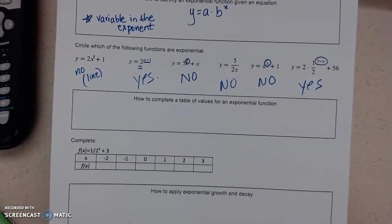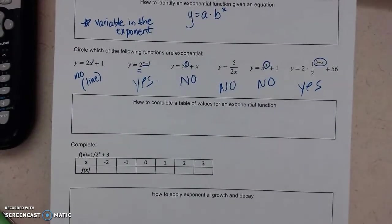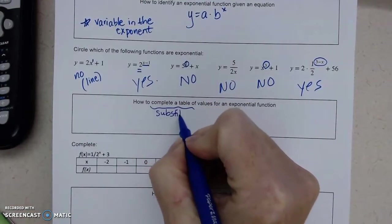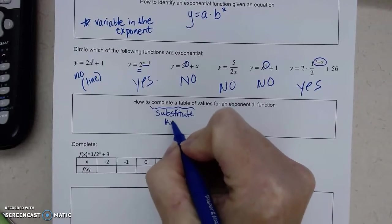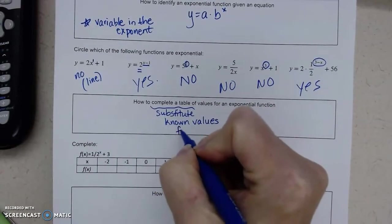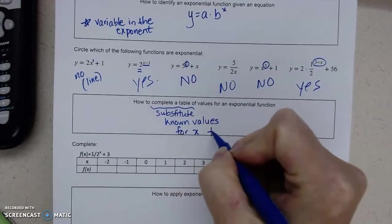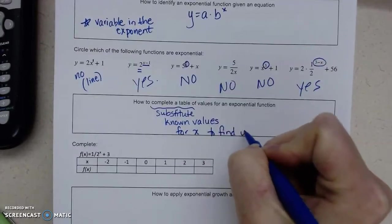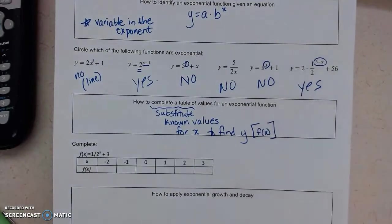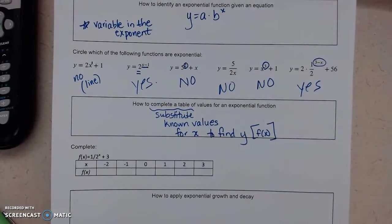Next we're going to have you complete a table of values. So if we complete a table, you're going to substitute known values for x to find y, which is also f of x. You can use a calculator, you can do this by hand, whatever you feel more comfortable with.